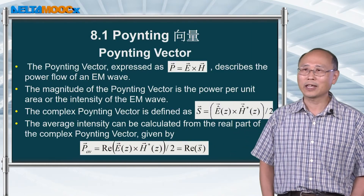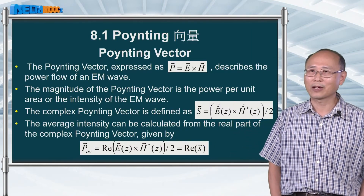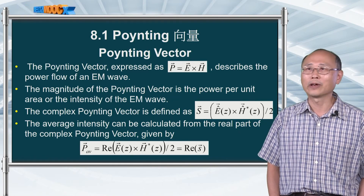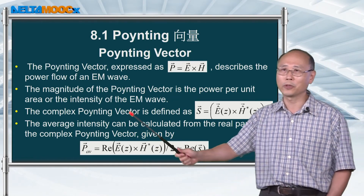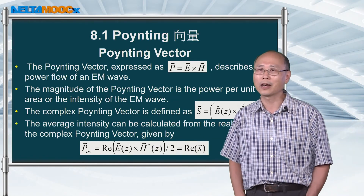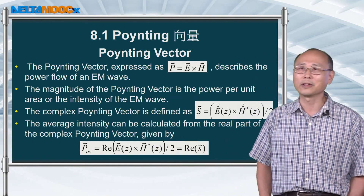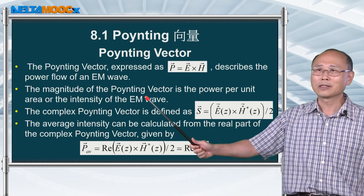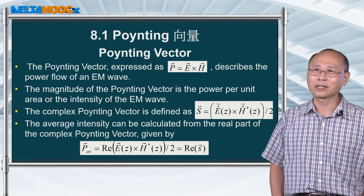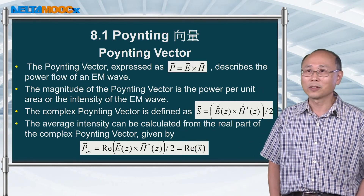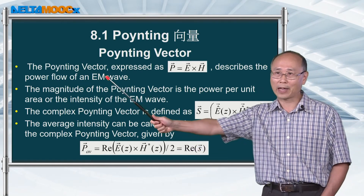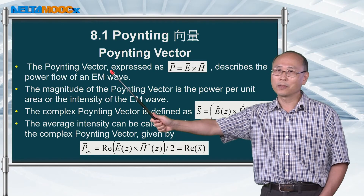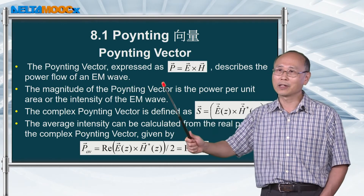In summary, this session covered the Poynting vector as representing power flow direction and intensity, corresponding to E cross H. We discussed three key pointing vectors and their physical significance for electromagnetic radiation.